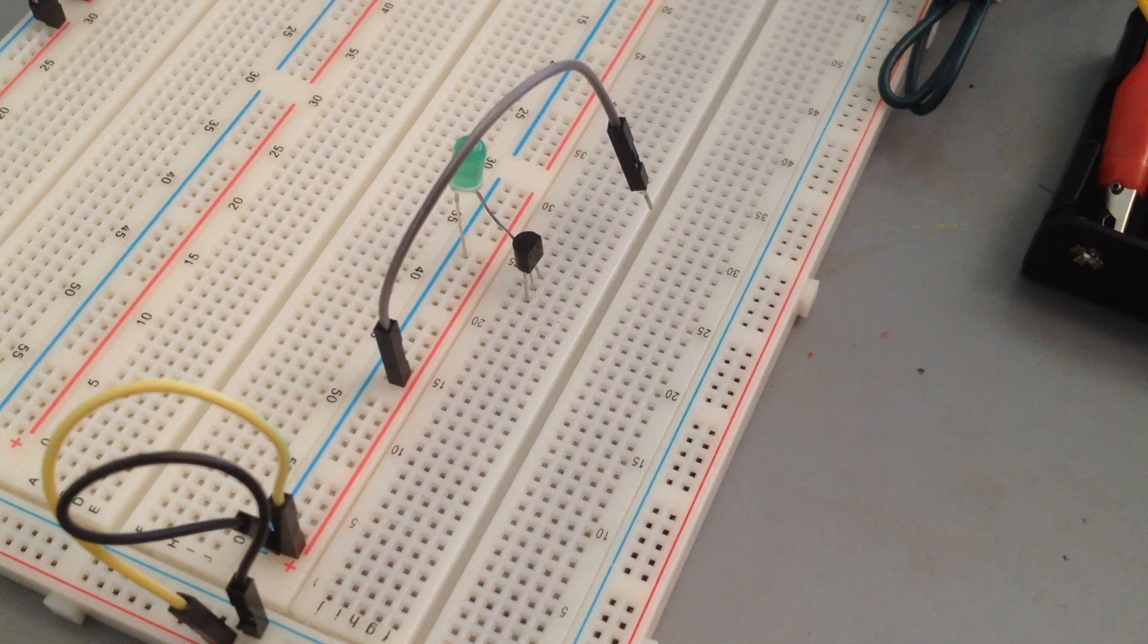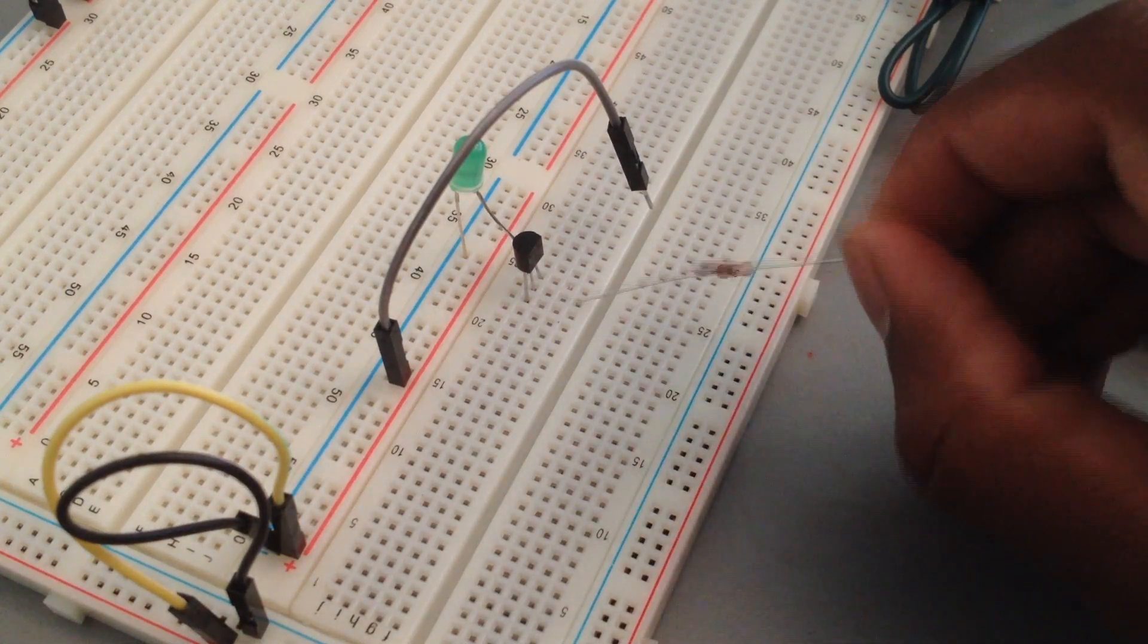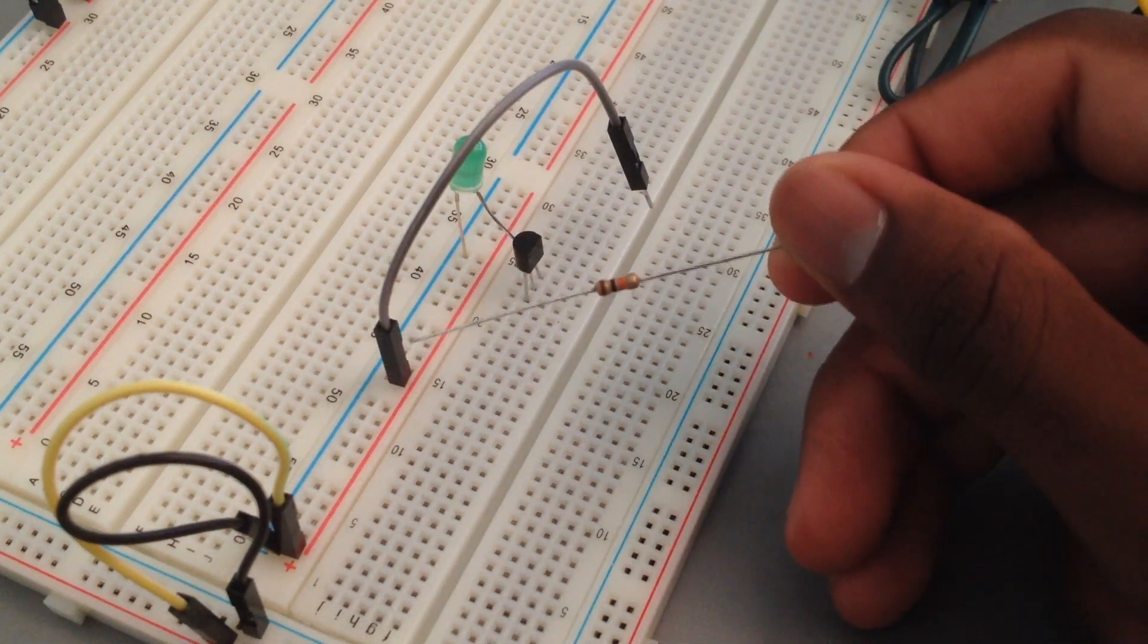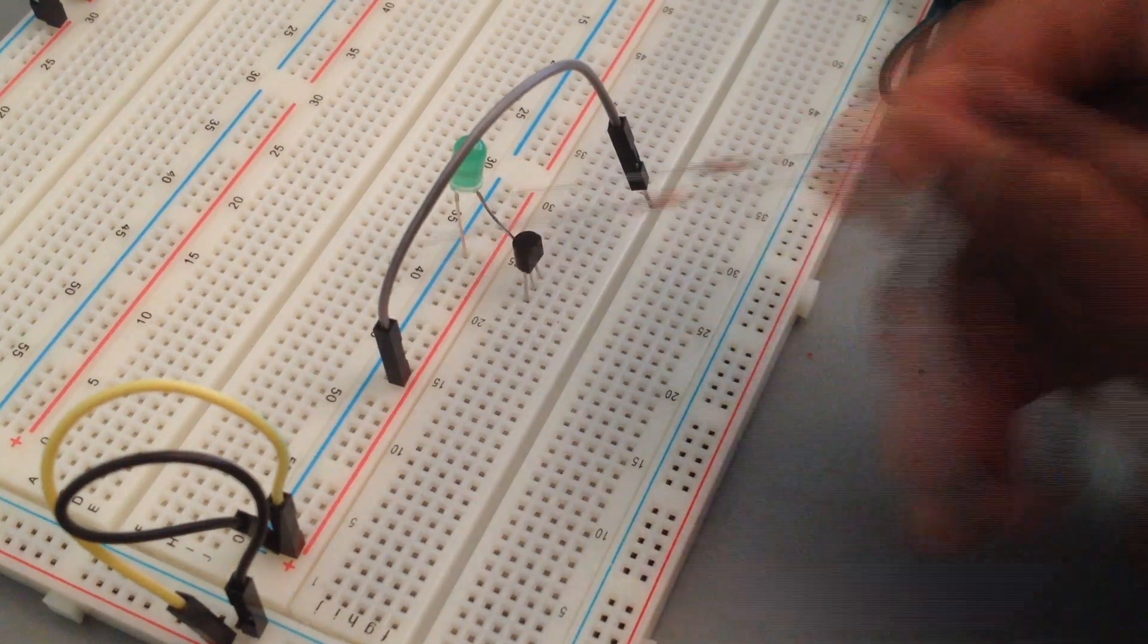And remember to always put a 10K resistor between the gate and VCC. 10K resistor, the resistor code is brown, black, orange. That's 10 kilo ohm.